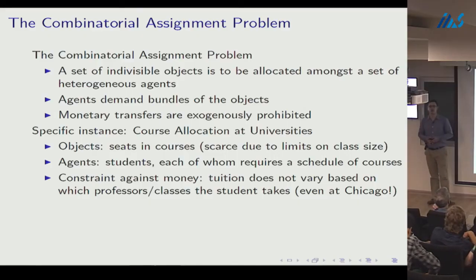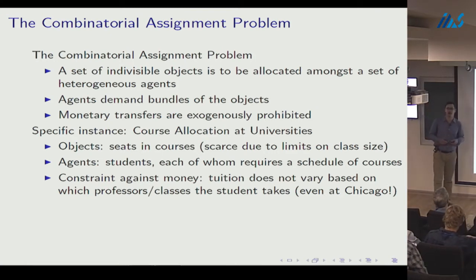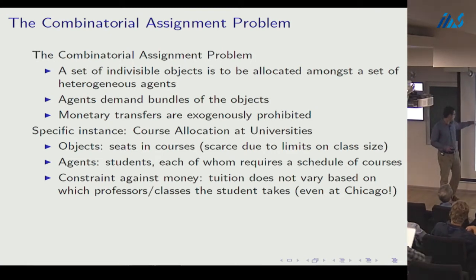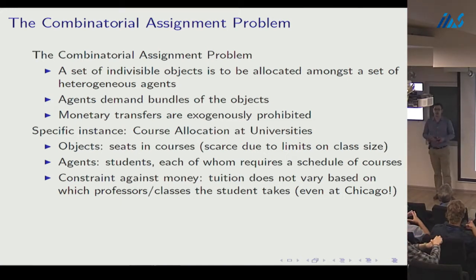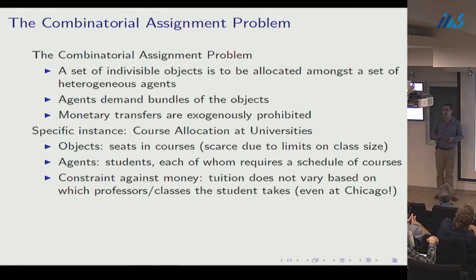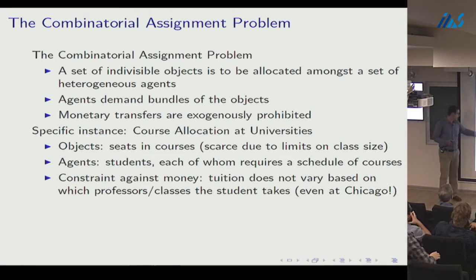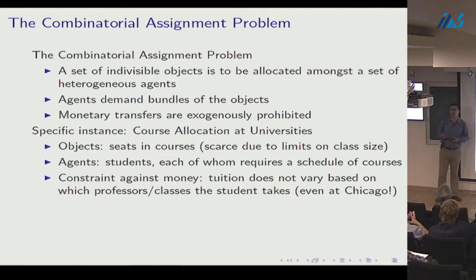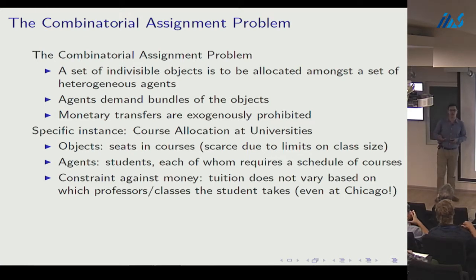The motivating instance for practical implementation is course allocation at universities. The indivisible objects are seats in courses, the agents are students whose preferences are defined over schedules of courses, and the constraint against money means tuition doesn't vary with the quality of professors. This is true even at the University of Chicago — you pay the same price whether you take my course or a good professor's course.